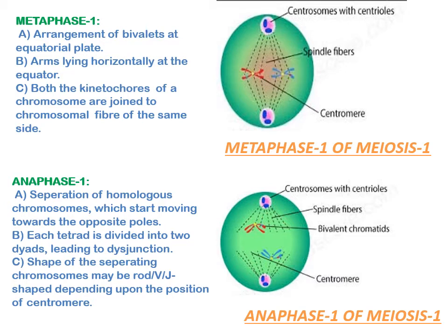In metaphase 1, bivalents arrange themselves on two parallel equatorial or metaphase plates, and each equatorial plate has one genome. The centromeres of homologous chromosomes lie equidistant from the equator and are directed towards the poles, while the arms lie horizontally on the equator. Each homologous chromosome has two kinetochores, and both kinetochores are joined to the chromosomal or tractile fibers of the same side. Proteinaceous interzonal fibers develop between the centromeres of homologous chromosomes.